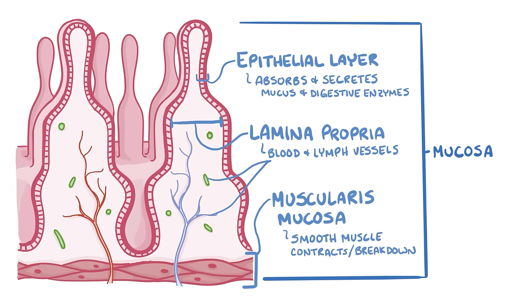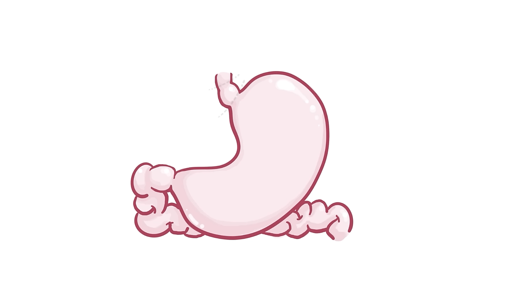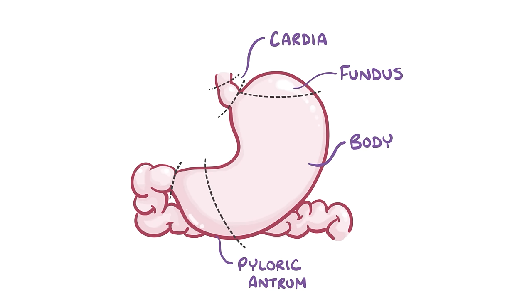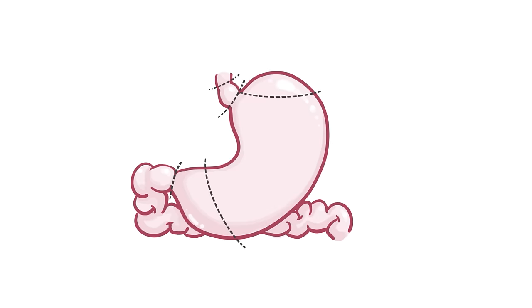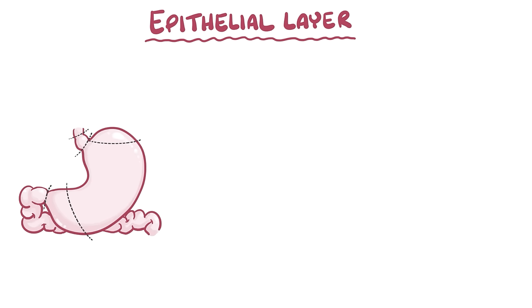In the stomach there are four regions: the cardia, the fundus, the body, and the pyloric antrum. There's also a pyloric sphincter, or valve, at the end of the stomach, which closes while eating, keeping food inside for the stomach to digest. The epithelial layer in different parts of the stomach contains different proportions of gastric glands, which secrete a variety of substances.